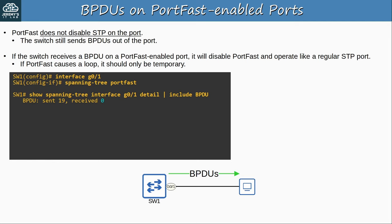When G0/1 is connected to another switch instead, SW1 had received 2 BPDUs on its G0/1 port — and PortFast is now disabled on G0/1. However, PortFast is still present in G0/1's configuration, it was just deactivated. To summarize: PortFast doesn't disable STP on ports, the port still sends BPDUs, and if a BPDU is received on a PortFast-enabled port, PortFast will be disabled and the port will operate like a regular STP port.